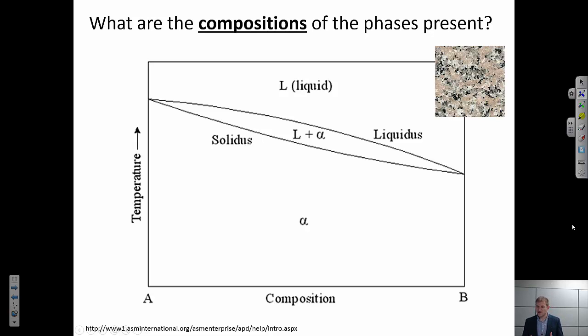What are the compositions of the phases present? Remember, I'm showing composition on the horizontal axis. So in order to determine composition of phases, basically I'm going to drop down and read that value off the horizontal axis. Now if I go back to our T1 case, this is pretty straightforward. I only have one phase, and the composition of that phase is the composition of the overall system. And this makes sense, right? If there's only one phase in the system, the composition of that phase has to match the composition of the overall system.